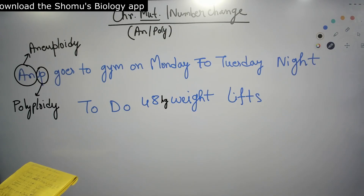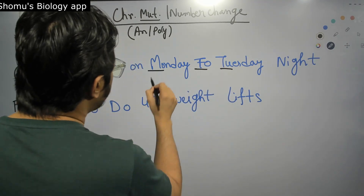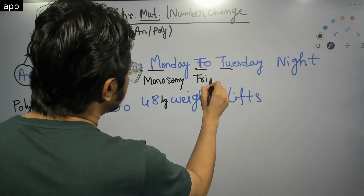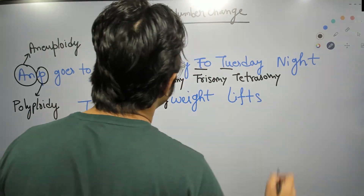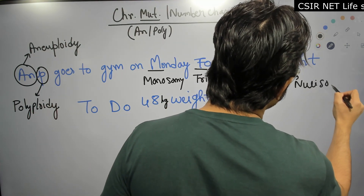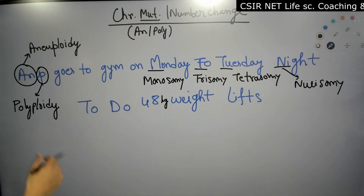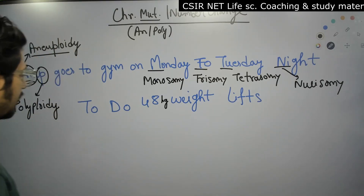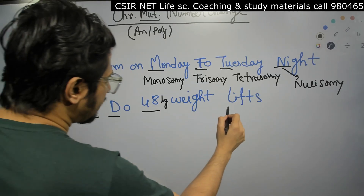Next: 'goes to gym on Monday to Tuesday.' M is for monosomy, T is for trisomy, the second T is for tetrasomy, and the N in 'night' is for nullisomy. So we have monosomy, trisomy, tetrasomy, and nullisomy — all four as part of aneuploidy. The next part 'to do 48 weight lifts,' with L at the end, gives us additional information.